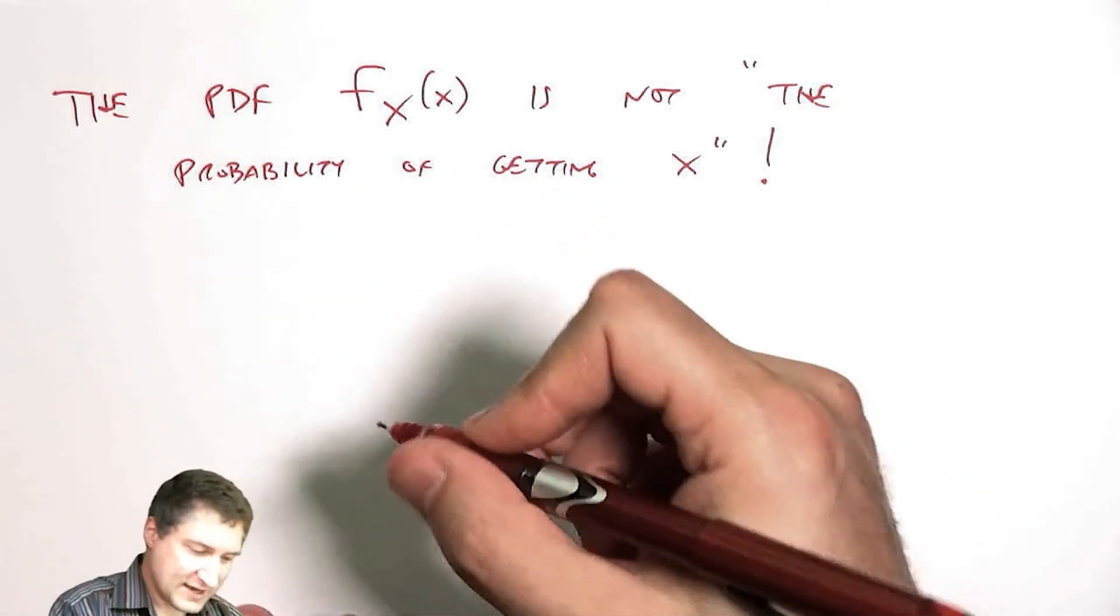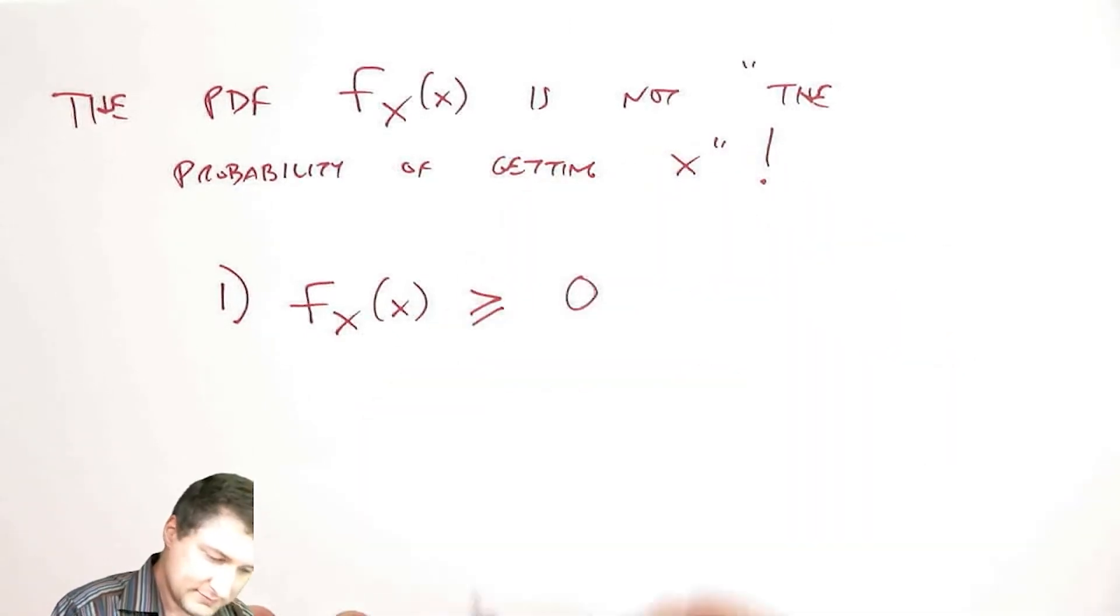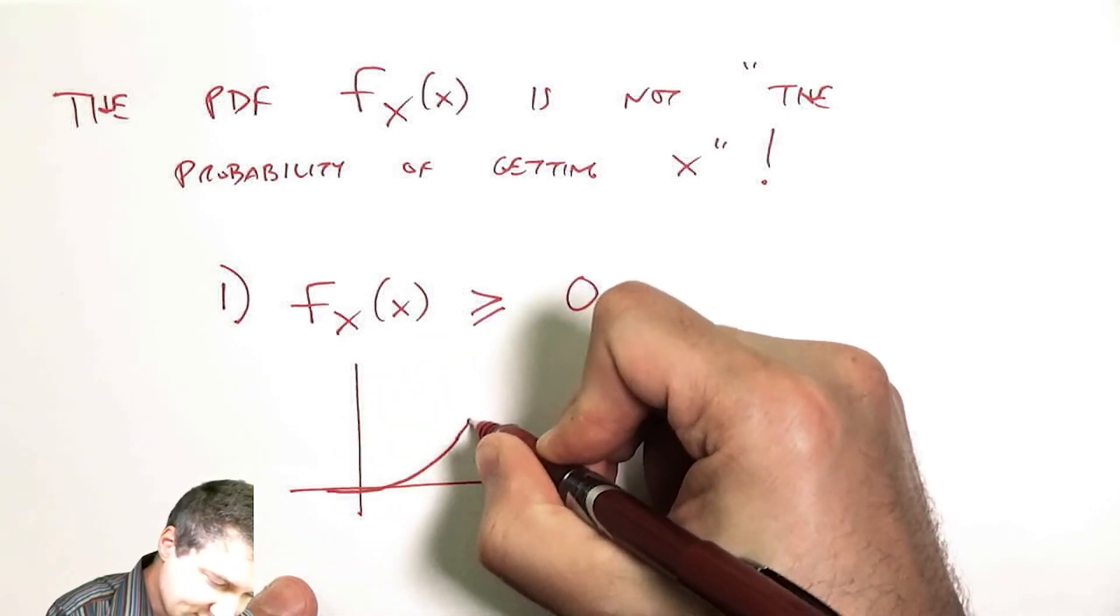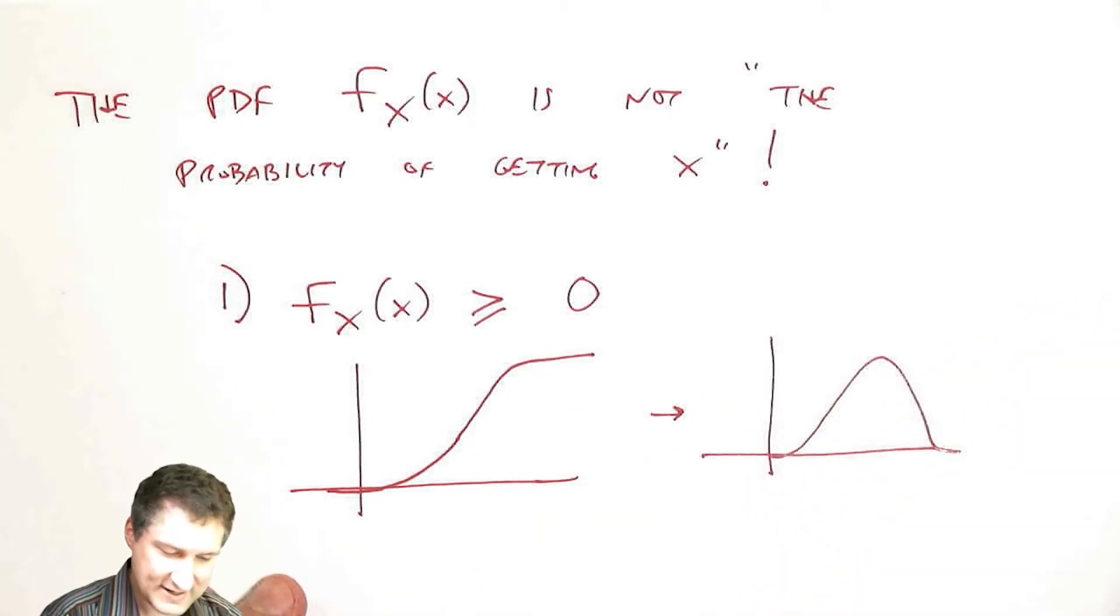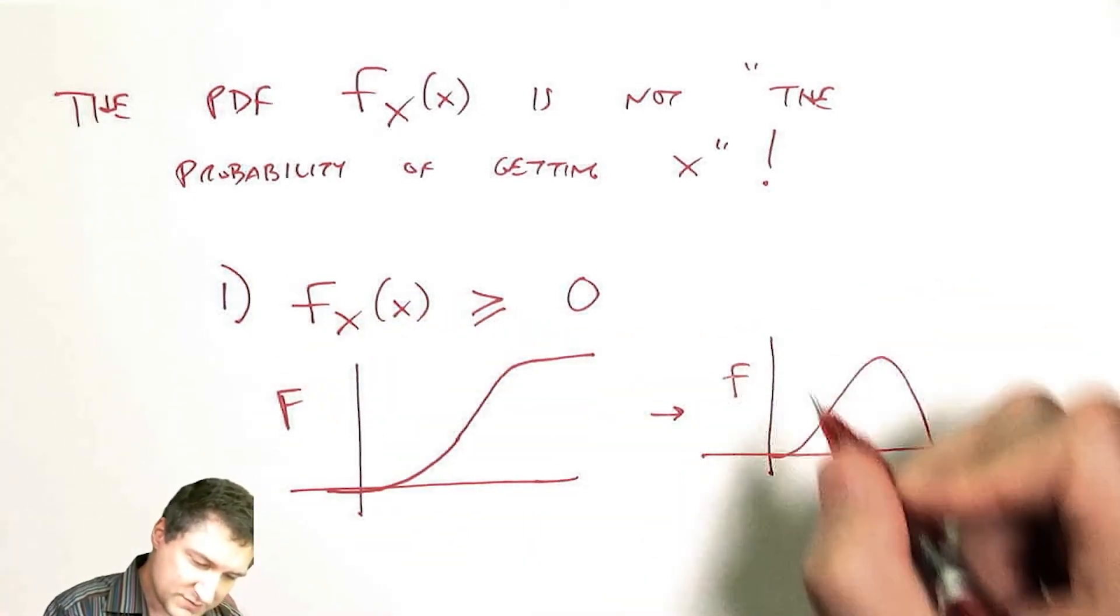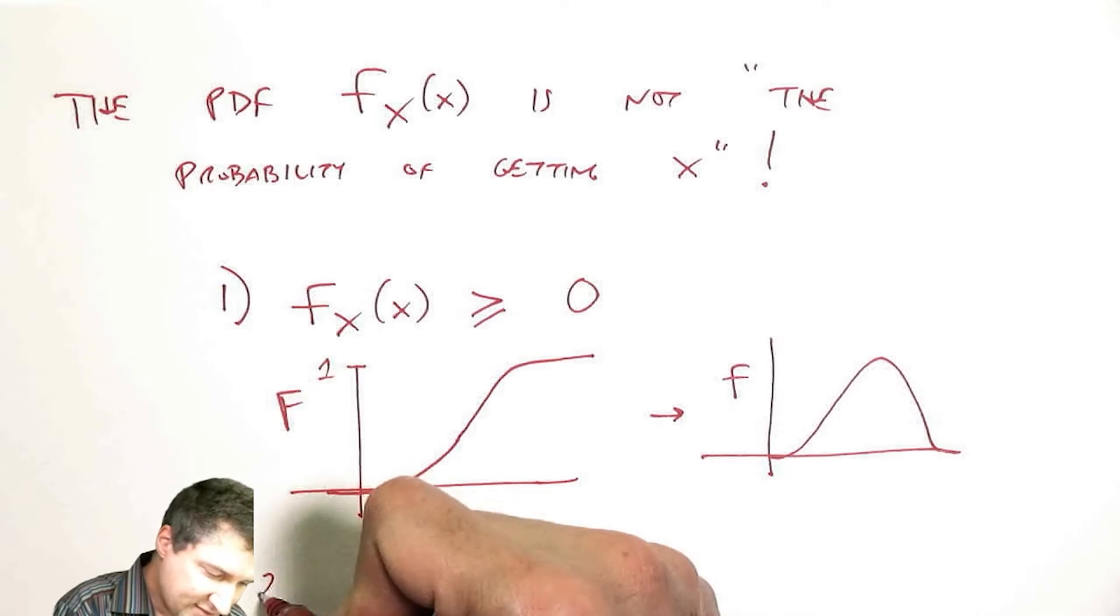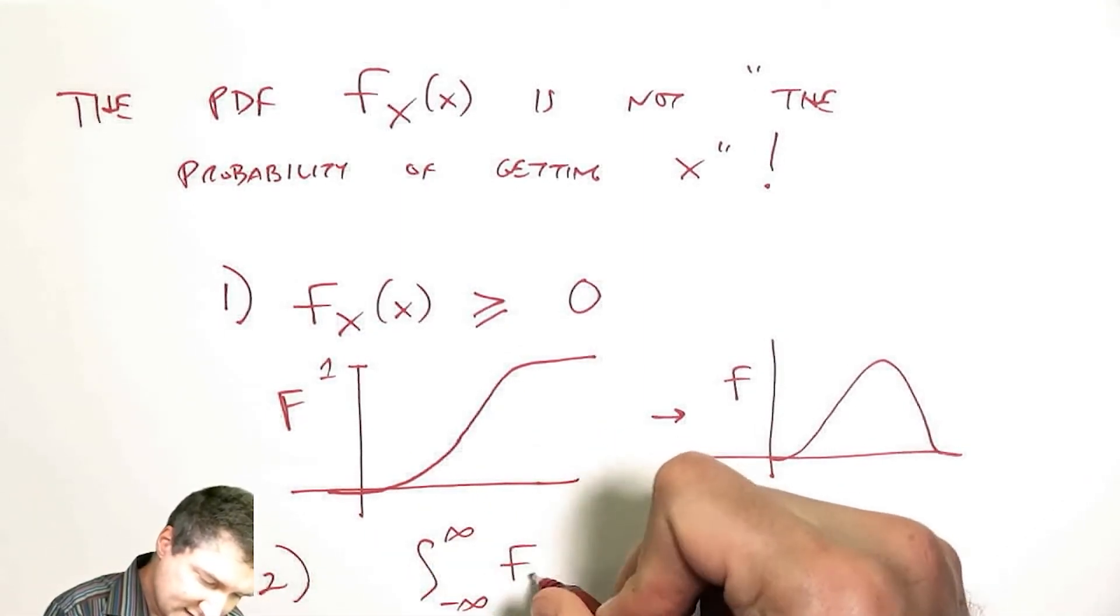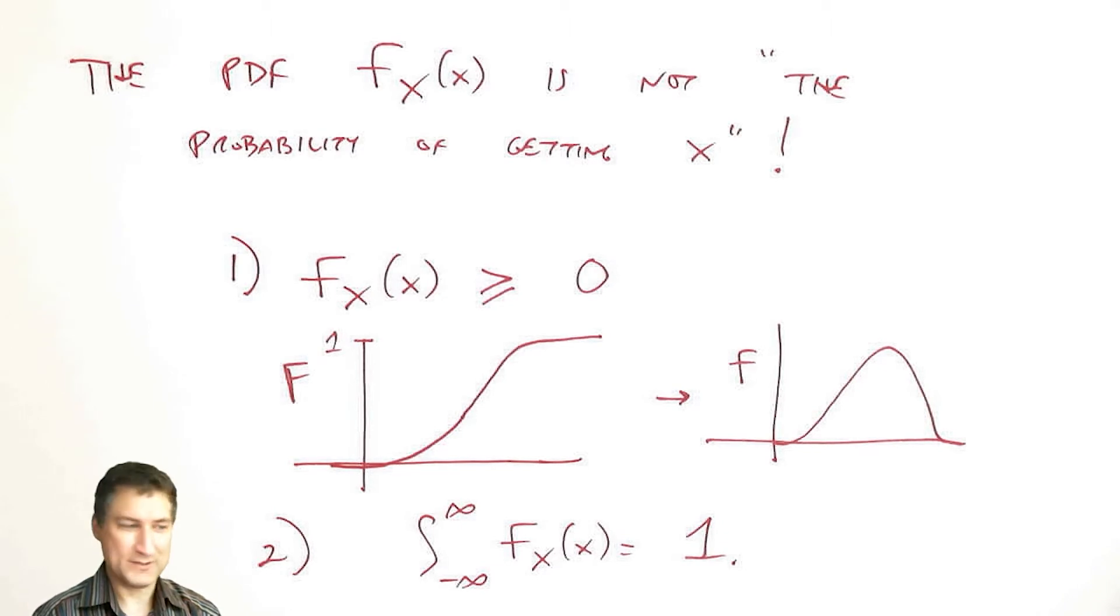Let me write down a couple properties of the PDF. One is that clearly the PDF has to be positive everywhere. We talked about how I can't have any sort of negative probabilities. This comes from the fact that the CDF is monotonically increasing, so all the derivatives, all the slopes of this thing, have to be positive. I can't go down in the CDF, which means that the derivatives are all positive. And we know that since I top out at 1 in the CDF, that the integral over the entire real line has to add up to 1. I have to be somewhere on the real line, so there's a total probability mass of 1, and I integrate that going from minus infinity to infinity.